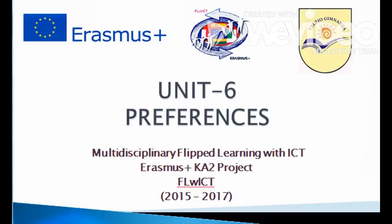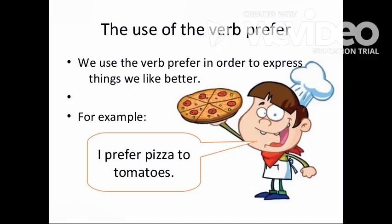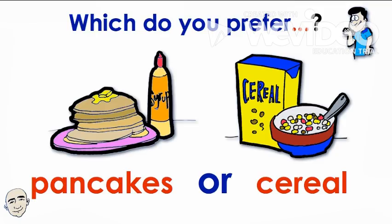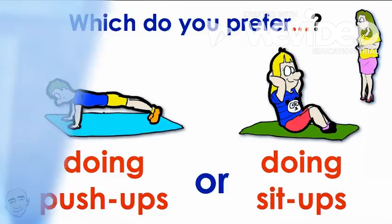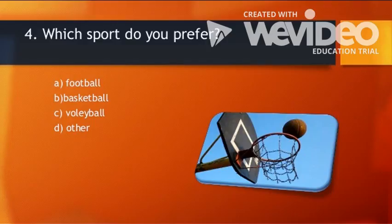Now the next part of our lesson: Preferences. The use of the verb 'prefer'. We use the verb 'prefer' in order to express things we like better. For example, I prefer pizza over tomatoes. Which do you prefer — pancakes or cereal? Which do you prefer — doing push-ups or doing sit-ups? Which sport do you prefer — football, basketball, volleyball, or hockey?